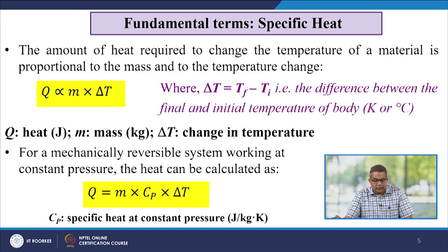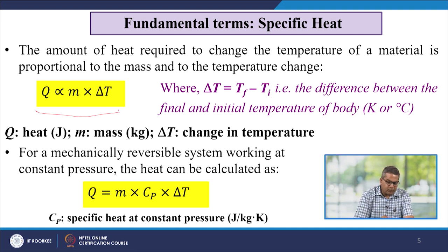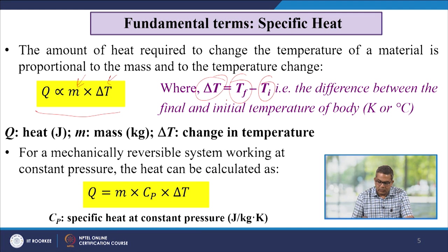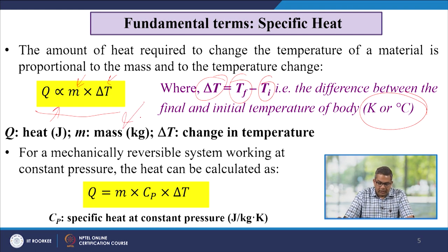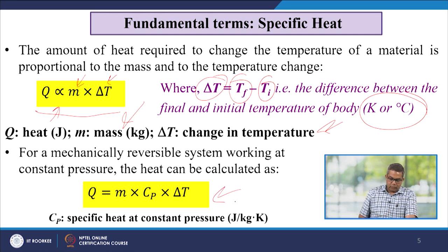Let us have a brief outlook on specific heat. This is the amount of heat required to change the temperature of a material, proportional to the mass and the temperature change. Q is proportional to M and ΔT, where ΔT is the final temperature minus the initial temperature. For a mechanically reversible system working at constant pressure, Q = M·Cp·ΔT, where Cp is the specific heat at constant pressure, with units of Joules per kilogram Kelvin.